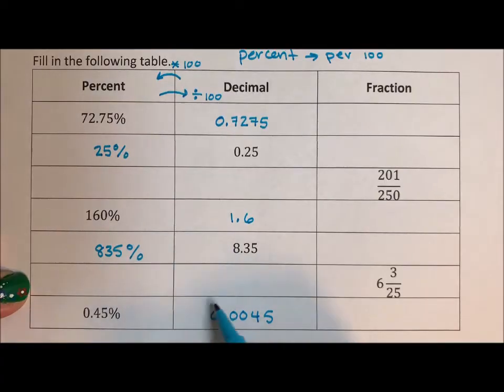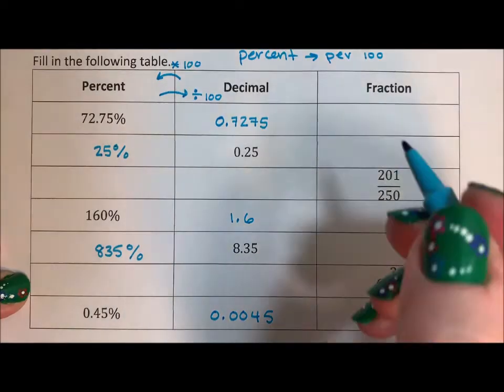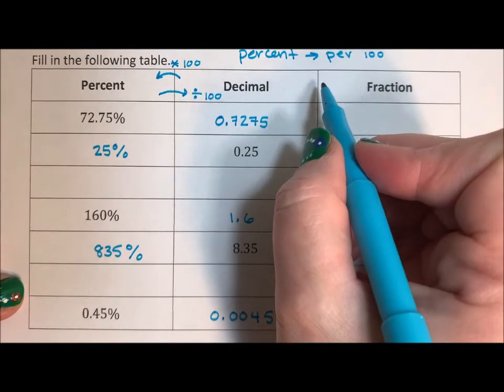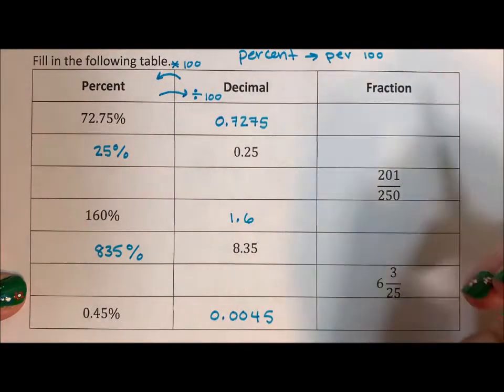So there's nothing more we can do until we move these numbers over. To go from a fraction to a decimal, we just divide.